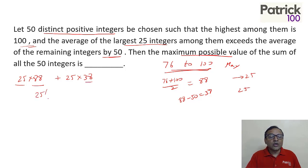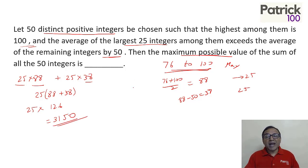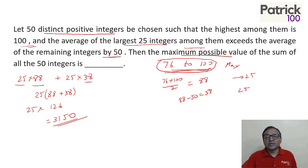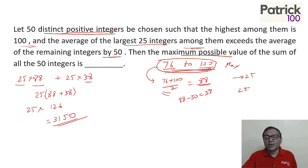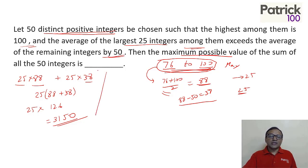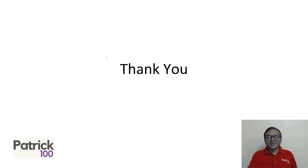The last 25 numbers have average 88, so the first 25 numbers have average 38, because the difference in averages is 50. Total sum is 25 into (88 + 38) = 25 into 126 = 3150. That's the answer. Since you want maximum, take the maximum possible values for the last 25 numbers which is 76 to 100, use the AP concept of average = (first + last) / 2, and the total sum is 3150.